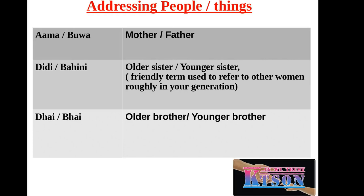Didi and bahini are also used as friendly terms to refer to other women roughly in your generation — you can say didi for older sister or bahini for younger sister. Similarly, dai means older brother and bhai means younger brother, also used as friendly terms for people in your generation.